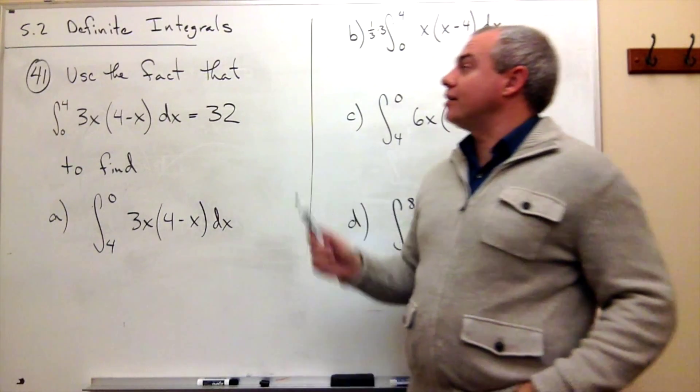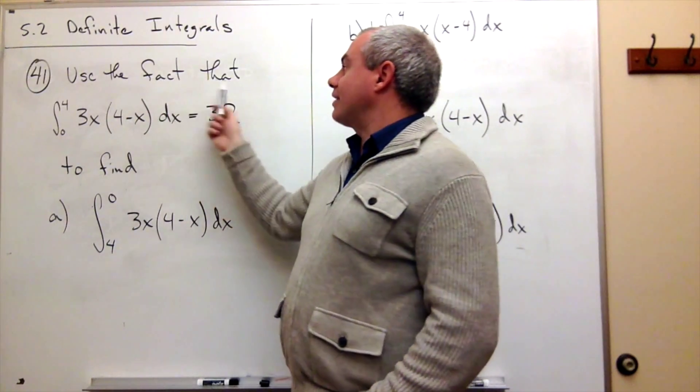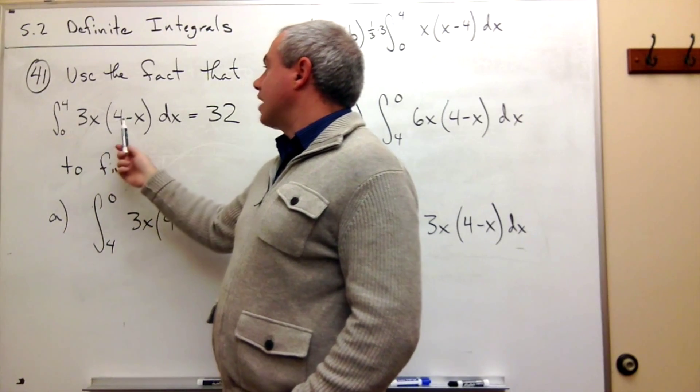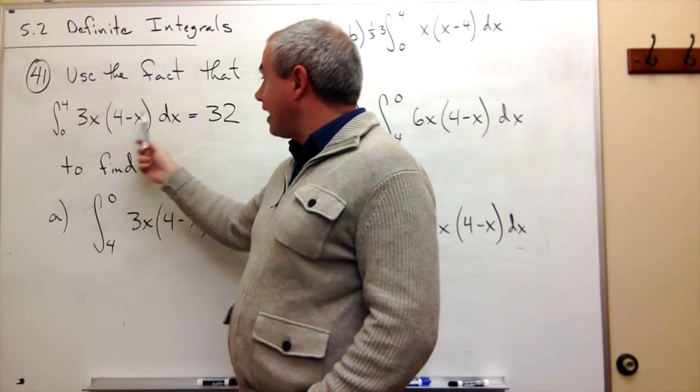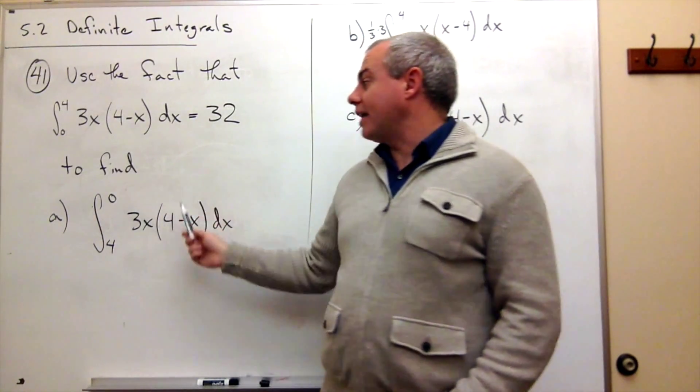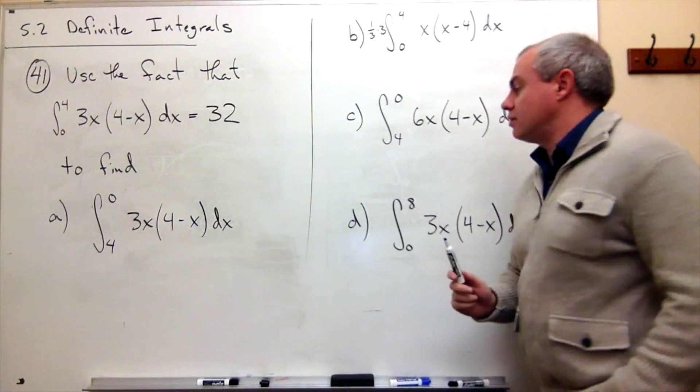In problem number 41, I want to use the fact that the integral from 0 to 4 of 3x times 4 minus x dx equals 32 to find four different integrals.